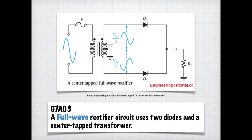Power diodes can be connected together to form a full wave rectifier that converts AC voltage into a pulsating DC voltage for use in power supplies. For the exam, you need to know that full wave rectifier circuit uses two diodes and a center tapped transformer, as you can see in this diagram.